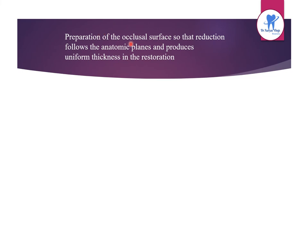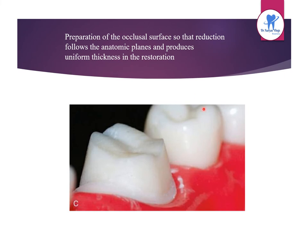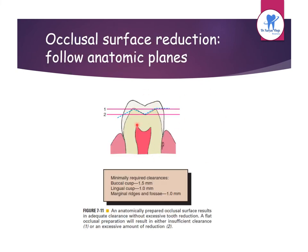Preparation of the occlusal surface should follow anatomic planes and produce uniform thickness in the restoration. An anatomically prepared occlusal surface results in adequate clearance, while a flat preparation results in insufficient clearance or excessive reduction. Minimally required clearances are: buccal cusp 1.5 mm, lingual cusp 1 mm, and marginal ridges 1 mm.